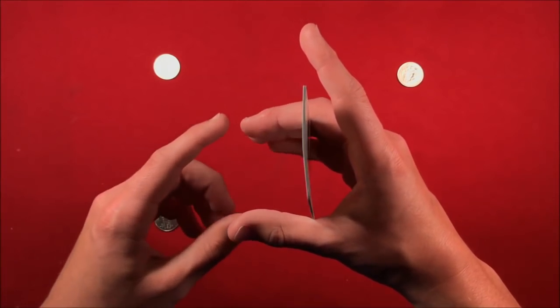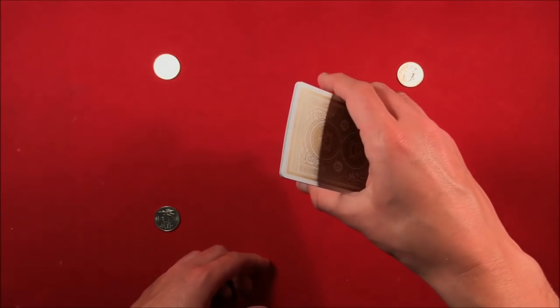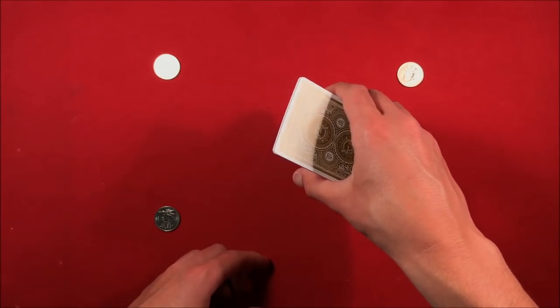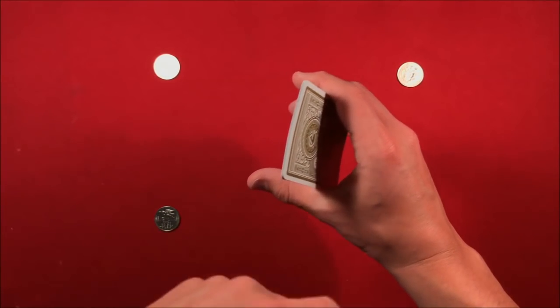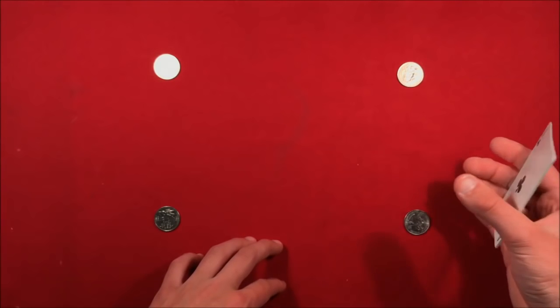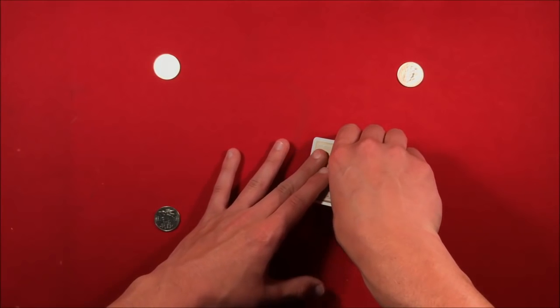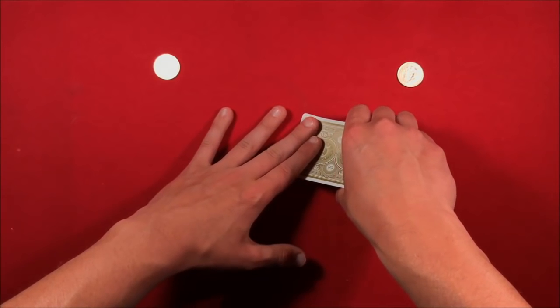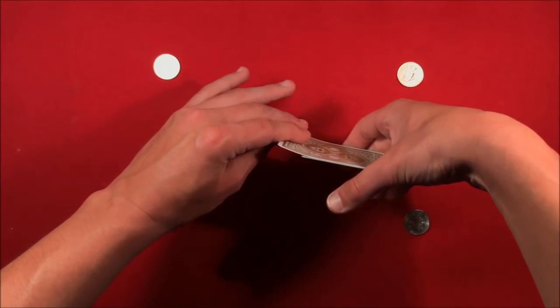So essentially what you're doing is you're holding them in this kind of weird grip in the ridges of your hands. And when you come down to grab, you say you're going to place an ace - all you're doing is peeling off the top card while holding on to the rest of them. But what you're doing is you're actually grabbing that quarter.